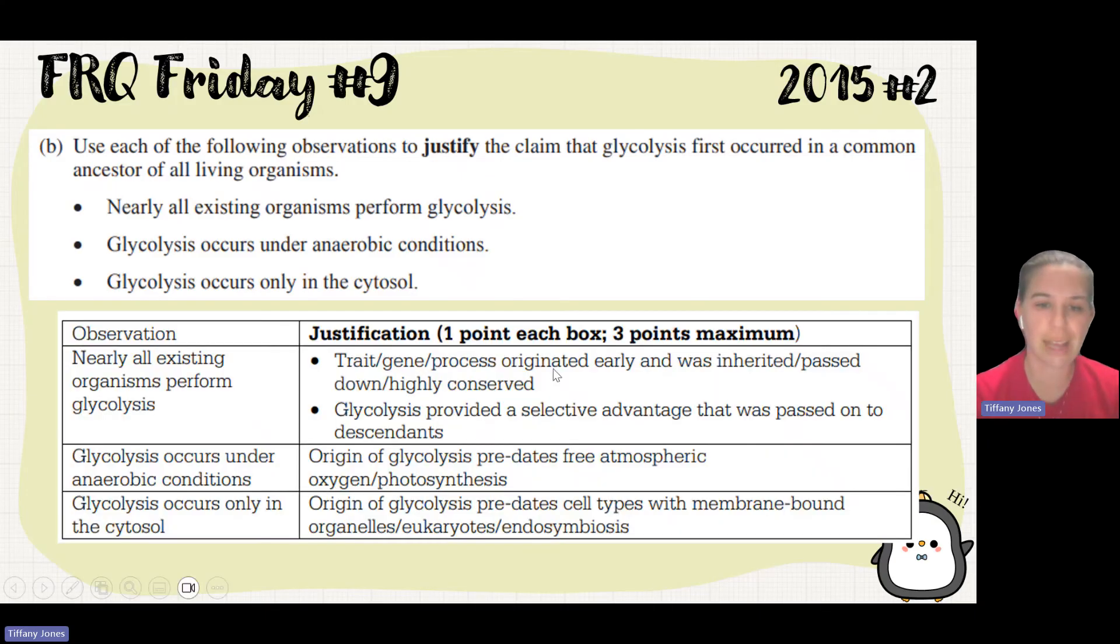It must have taken place before membrane-bound organelles or before there was a mitochondria. This trait was originated early and passed down. Glycolysis provides selective advantage that's passed on. The origin predates the atmospheric oxygen or predates photosynthesis. And the origin of glycolysis predates our membrane-bound organelles, our eukaryotes, or endosymbiosis.